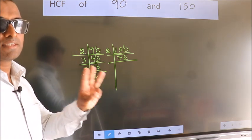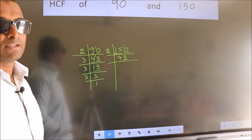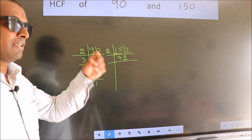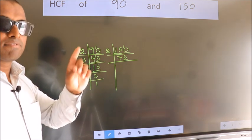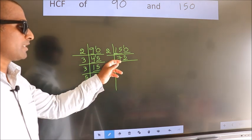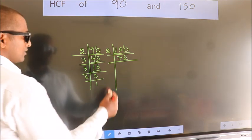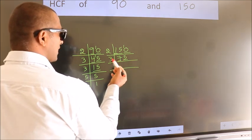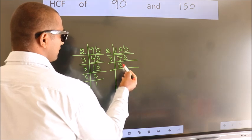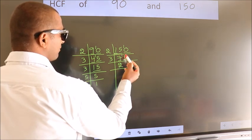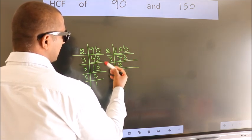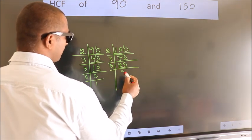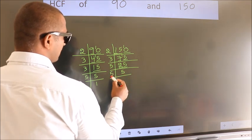Next prime number is 3. To check divisibility by 3, we add the digits: 7 plus 5 is 12. Is 12 divisible by 3? Yes. So take 3. A number close to 7 in the 3 table is 3 twos, 6. 7 minus 6 is 1, carried forward: 15. We get 15 in the 3 table as 3 fives 15. Now 25 is 5 fives 25, and 5 is a prime number, so 5 once 5.